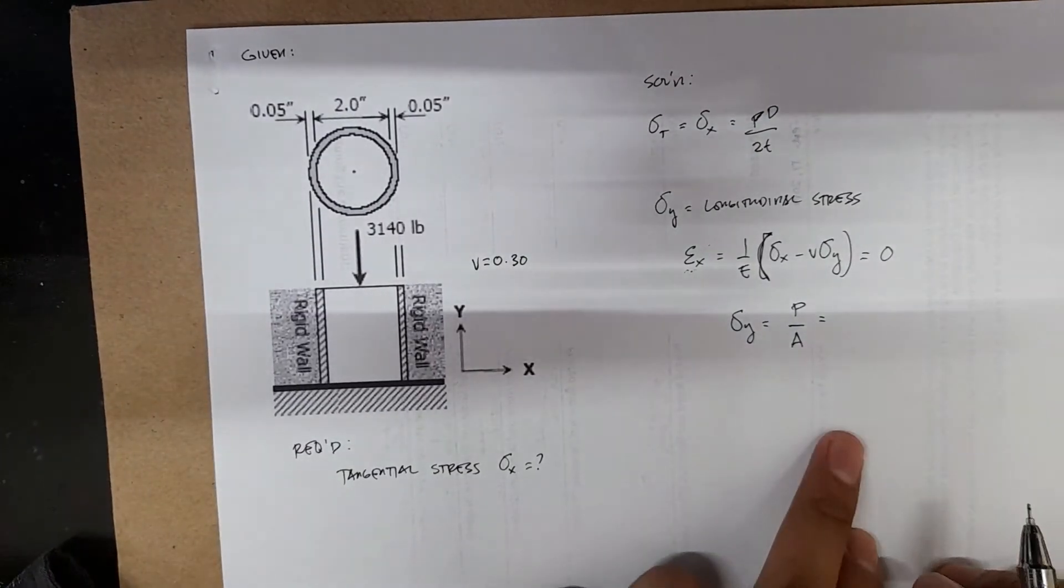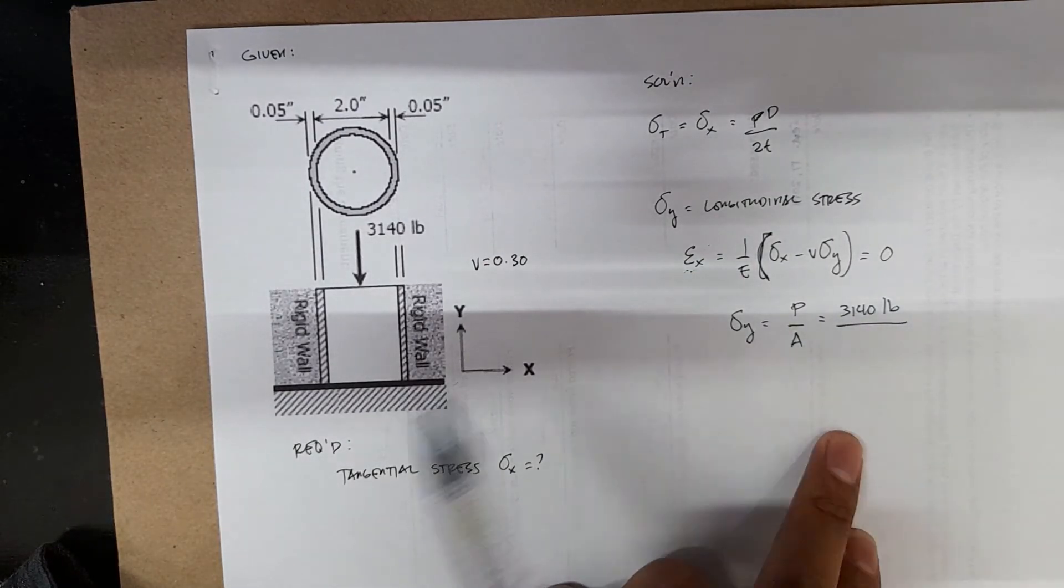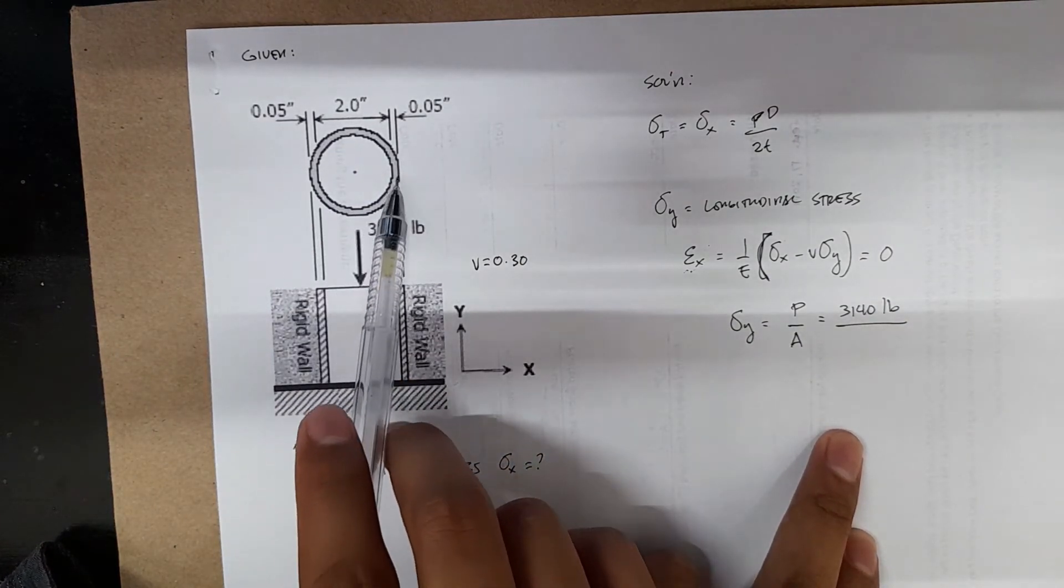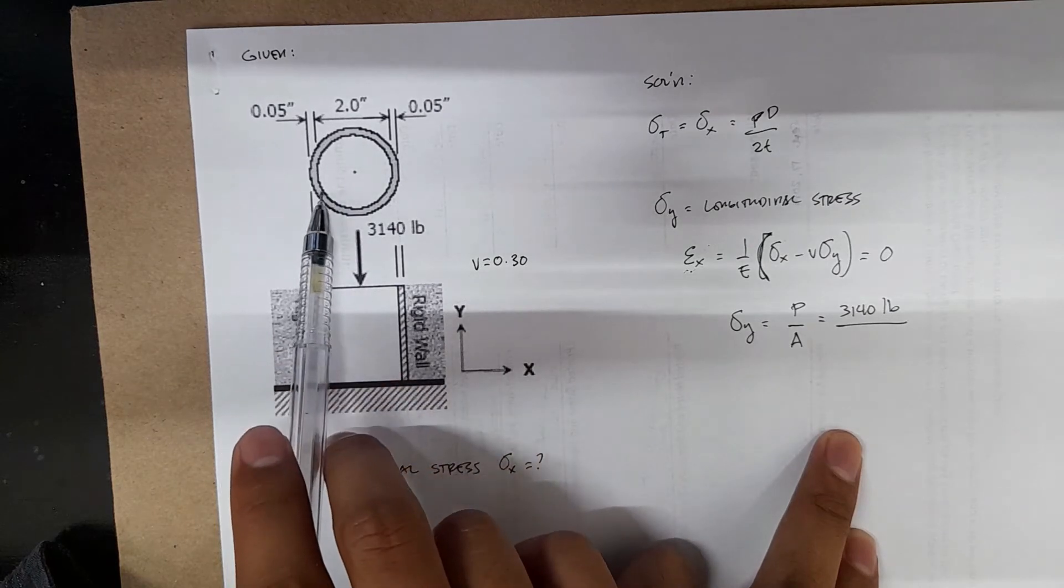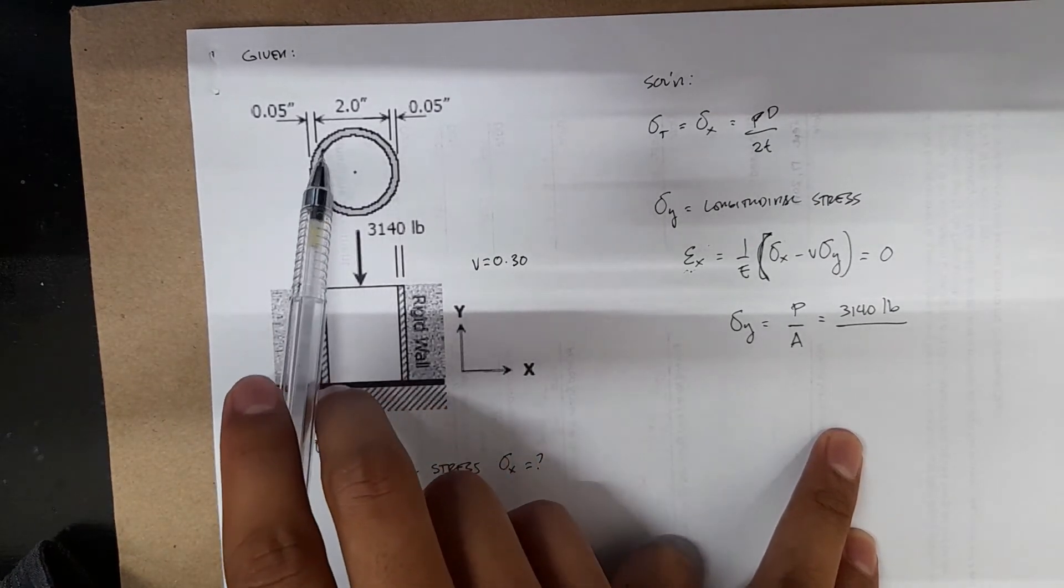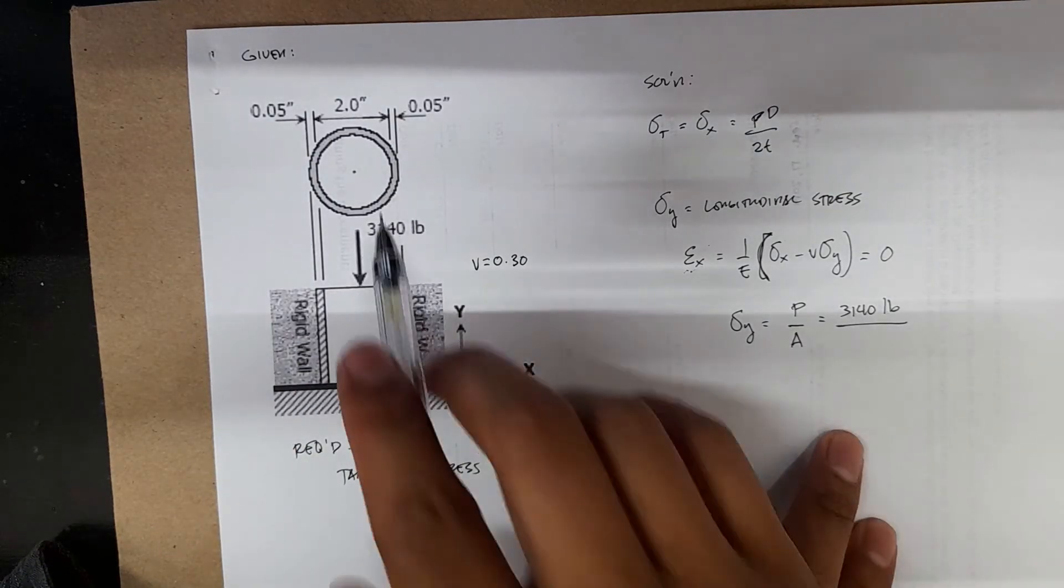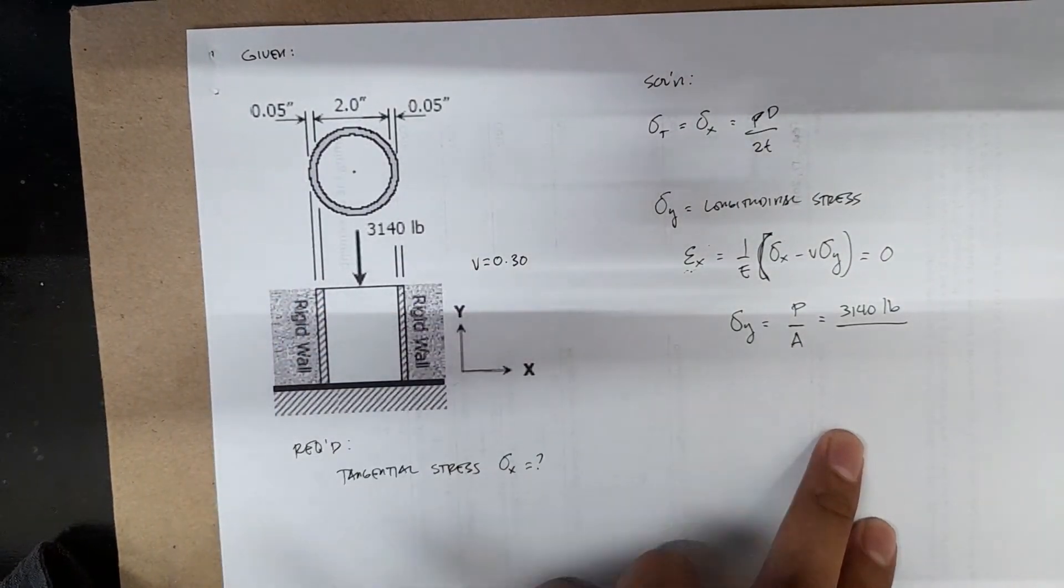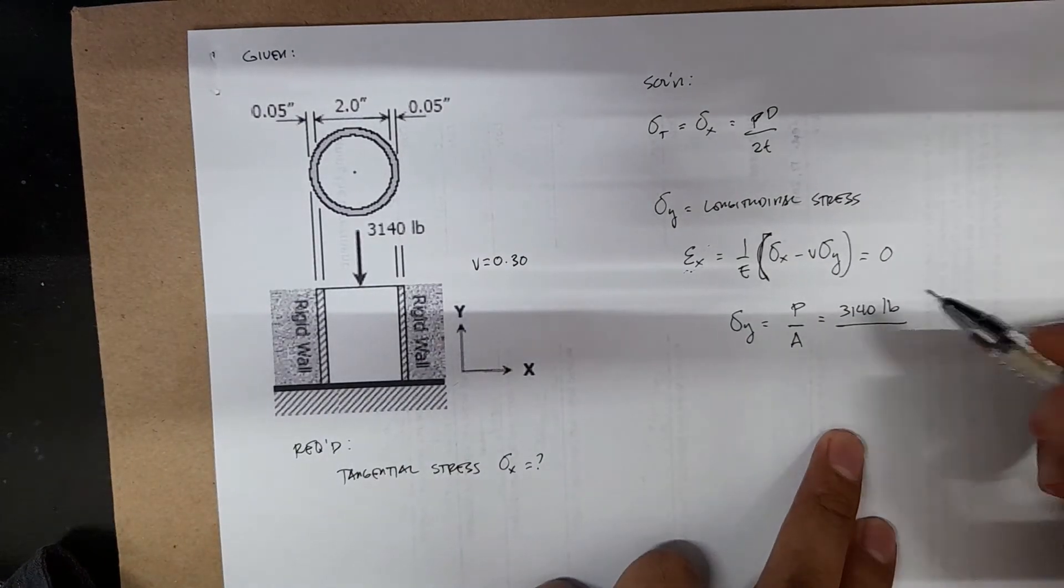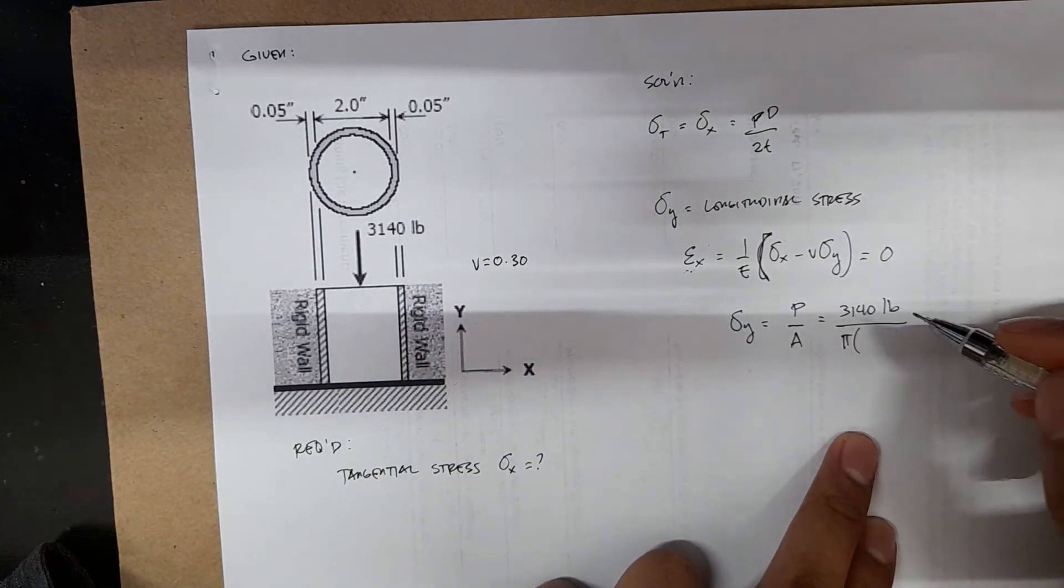This equals 3,140 pounds divided by the area. The stressed area is the colored portion here carrying the compressive stress. That's pi times diameter times thickness, so pi D times t. Pi times diameter, which is 2 inches, times the thickness, which is 0.05 inches.